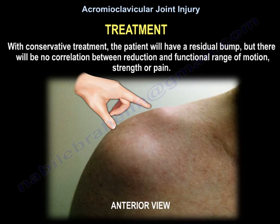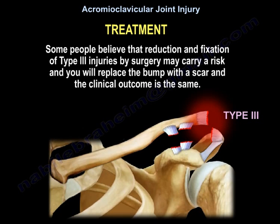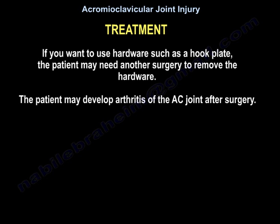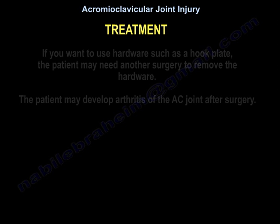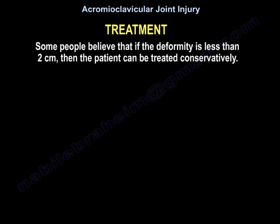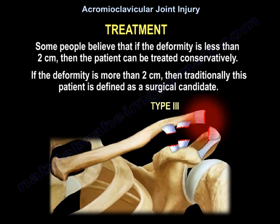Some believe that reduction and fixation of Type 3 by surgery may carry risks — you replace the bump with a scar and the clinical outcome is the same. If you use hardware like a hook plate, the patient may need another surgery to remove it and may develop arthritis of the AC joint afterward. Traditionally, deformity less than 2 cm was treated conservatively, while more than 2 cm was considered a surgical candidate.